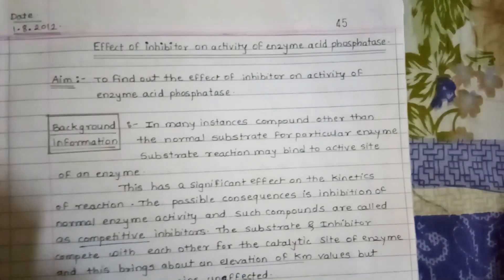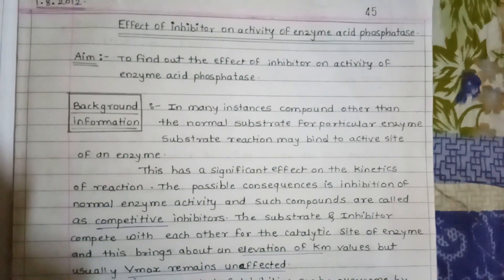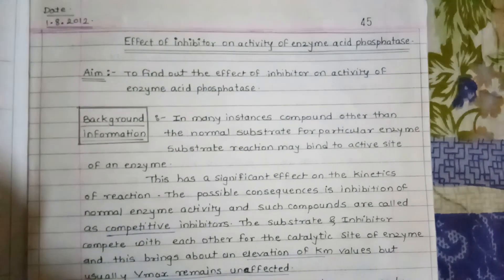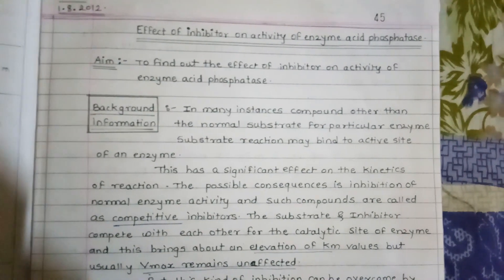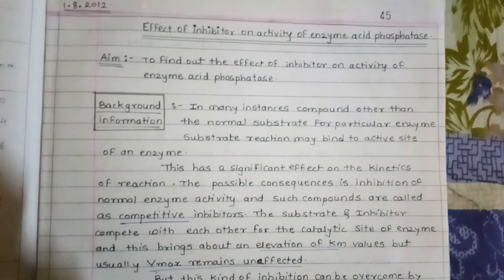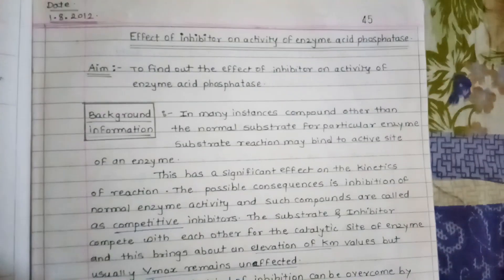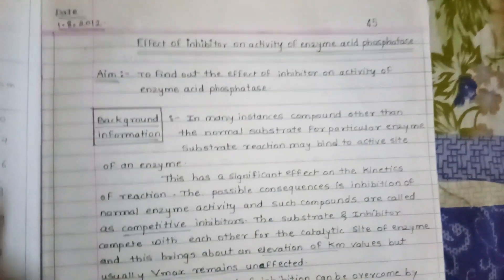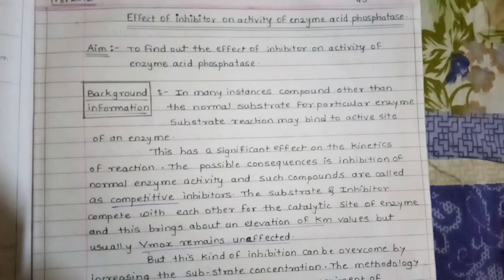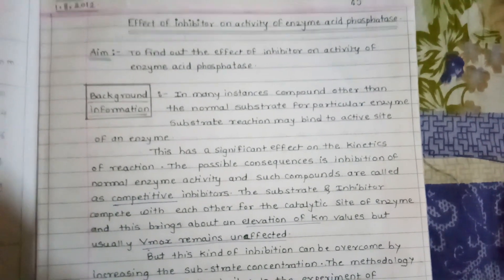Hello everyone. In this experiment, we will be studying the effect of inhibitor on the activity of an enzyme called acid phosphatase. In our previous video, we studied the effect of varying substrate concentration on the activity of acid phosphatase. Today we will be studying the effect of inhibitor — if we add the inhibitor, how the enzyme activity gets affected. Our main objective or aim is to find out the effect of inhibitor on the activity of acid phosphatase.